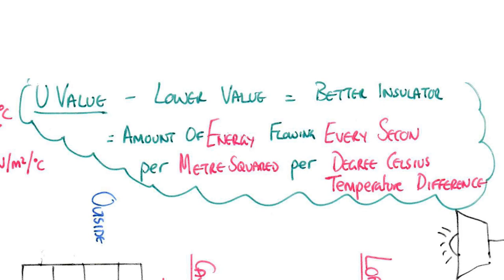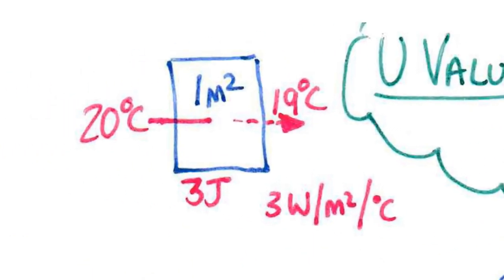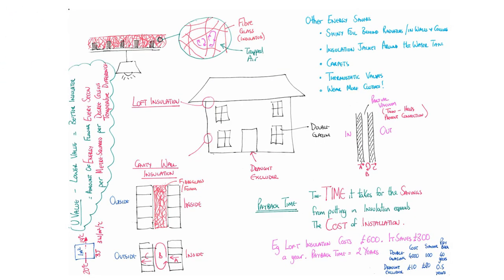This diagram tries to explain it. That blue box represents, say, a pane of glass. There's a temperature difference of 20 degrees on the inside, 19 degrees on the outside, and it's a meter squared. We've got the standard unit of area, the standard temperature difference of one degree C, and then you measure how much energy goes through every second. That says three joules, so this would be shown as 3 watts per meter squared per degree C. It's basically a measure of working out how good something is at being an insulator. That is everything you need to know about heating your house, the cost of heating, how to save money, and U-values.